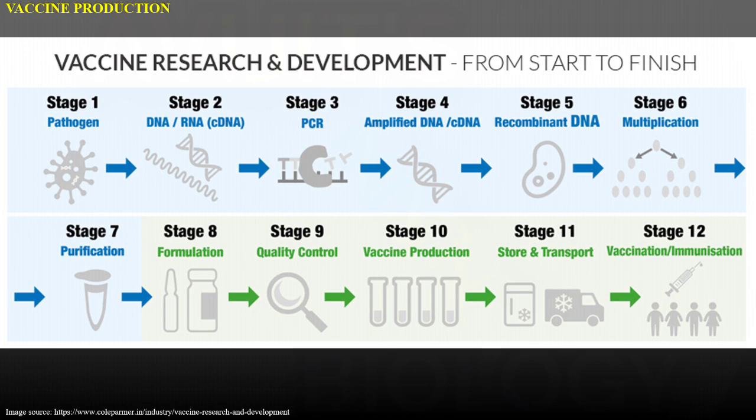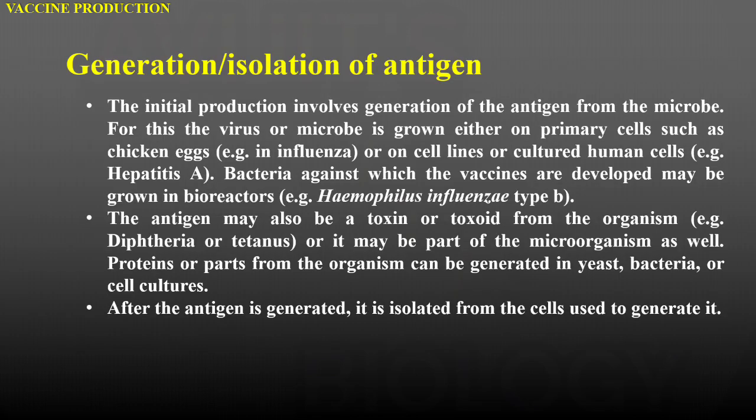The first stage in vaccine production involves generation or isolation of antigen. The initial production involves generation of antigen from the microbe. For this, the virus or microbe is grown either on primary cells such as chicken eggs, like in influenza, or on cell lines or cultured human cells like hepatitis A. Or sometimes bacteria against which the vaccines are developed may be grown in bioreactors, like Haemophilus influenzae type B.